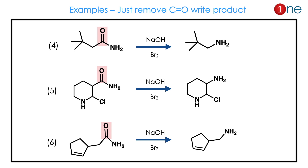Even bulkier groups also migrate — that is the fourth example: CO removal gives the final product. Even acyclic compounds with heterocycles also participate; Hofmann reaction is possible and the final product is amine. The sixth example also involves a ring with an amide, which converts into amine.